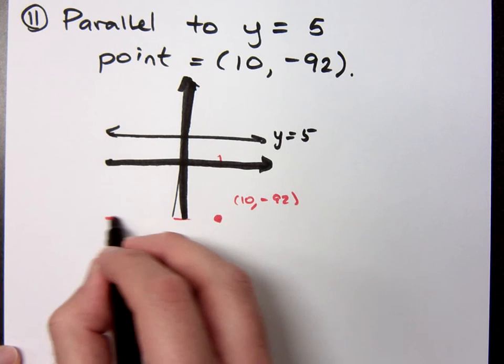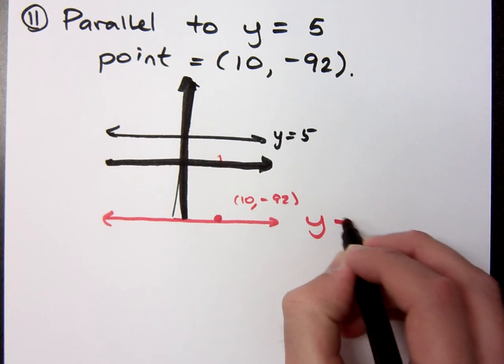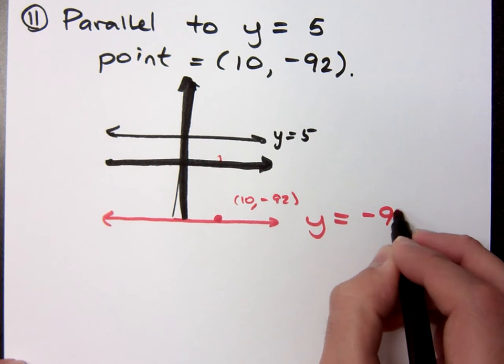You're right. If you're going to be a horizontal line that goes through this point, then the equation is y equals negative 92.